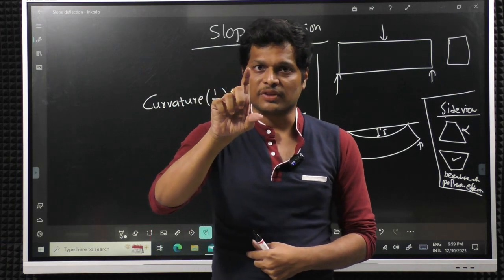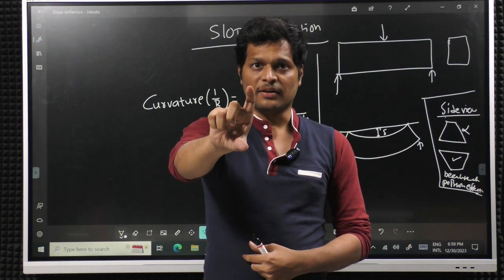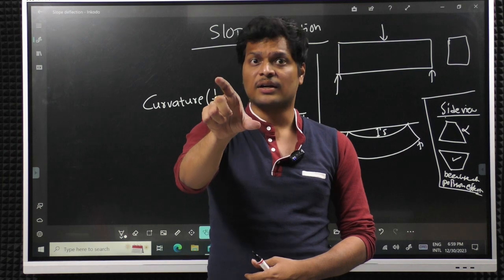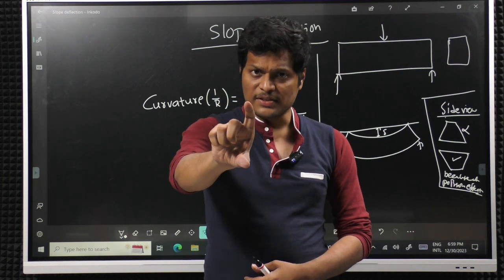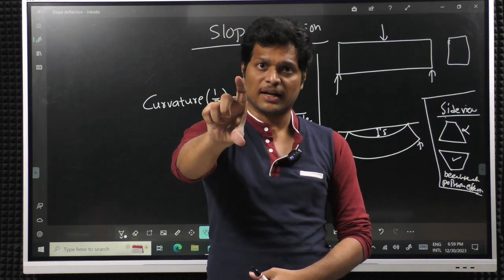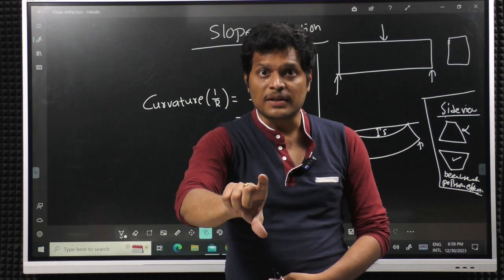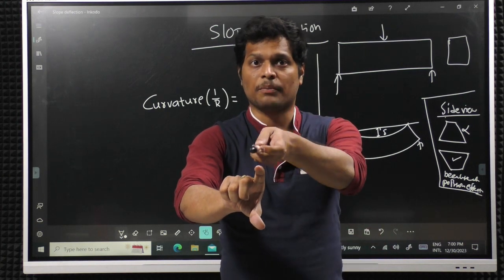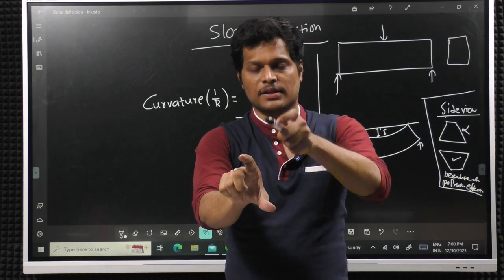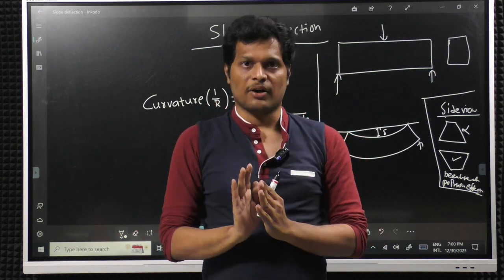Slope and deflection of the cross section is what we are finding. Slope means: initially the cross section is like this, finally how is it — is it rotated? If it is in the same orientation, the slope is zero. If it was initially here but finally displaced vertically, it does not have slope but it has deflection. If it is both rotated and deflected, then this much is the rotation and this much is the deflection.